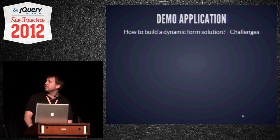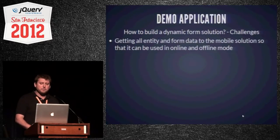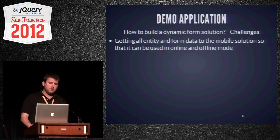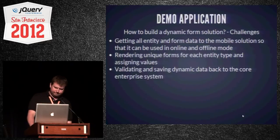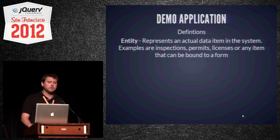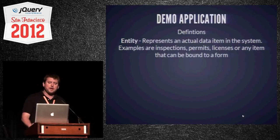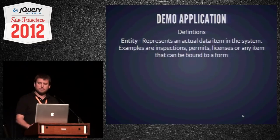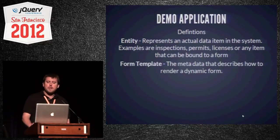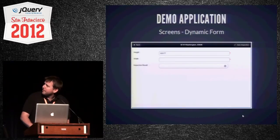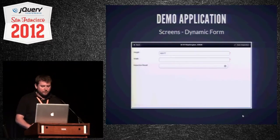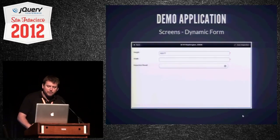The challenges for building a dynamic form solution are: getting all entity and form data to the mobile solution for online and offline use; rendering unique forms for each entity type and assigning values; and validating and saving the dynamic data back to the core enterprise system. An entity is an object representing an actual data item — examples include inspections, permits, and licenses. Form templates provide the metadata that describes how to render a dynamic form. The controls come from the form template and are bound to the entity via a property.